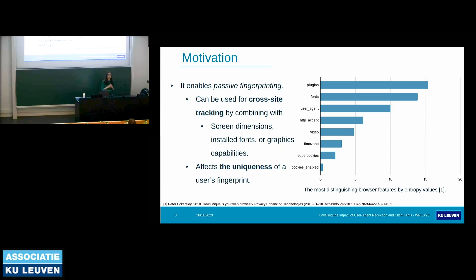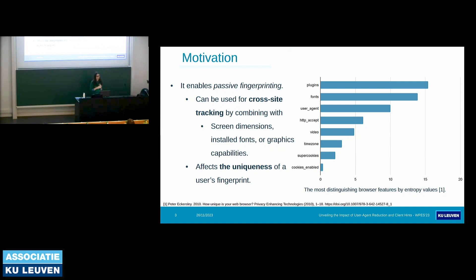This type of browser fingerprinting is called passive browser fingerprinting because it can be directly extracted from network packets without running any client-side code. That's why it is almost impossible to detect by end users or privacy security researchers. User agent string also influences the uniqueness of users' browser fingerprinting because of the discriminating information it contains. According to previous research, user agent string is the third most distinguishing browser feature after installed plugins and fonts.